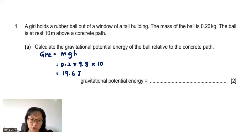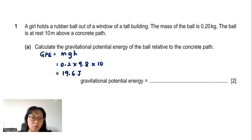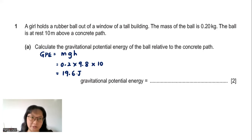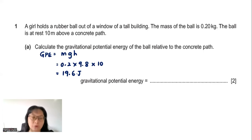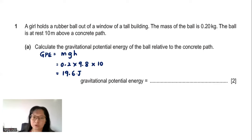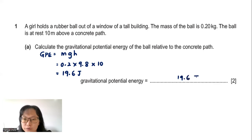You can round it to 20 joules. Remember, before filling in the blank for gravitational potential energy, make sure you have rounded your final answer to at least two and at most three significant figures. So 20 joules or 19.6 joules are both acceptable.